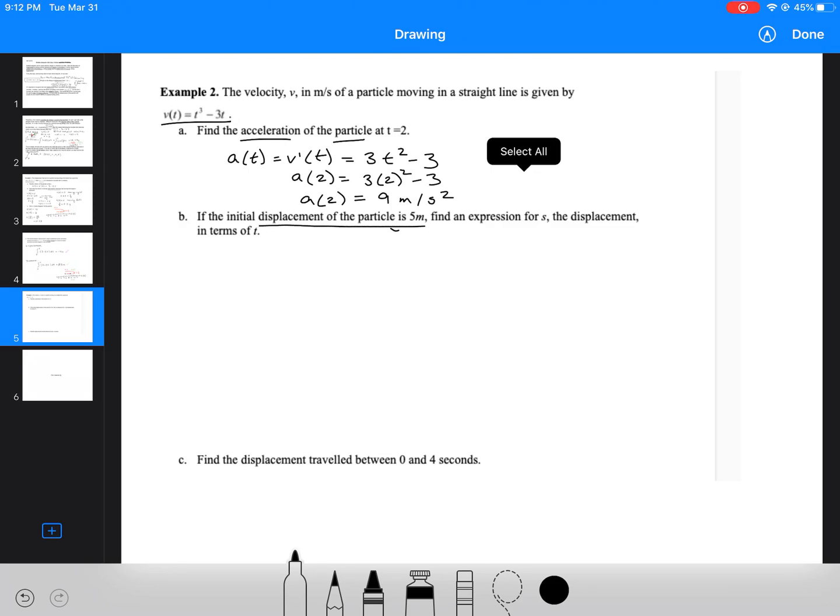The next question says if the initial displacement of the particle is 5 meters, find an expression for s, the displacement in terms of t. So here we're going in the opposite direction. We are looking for s(t), which we know is the integral of v(t) dt. Note this is an indefinite integral.